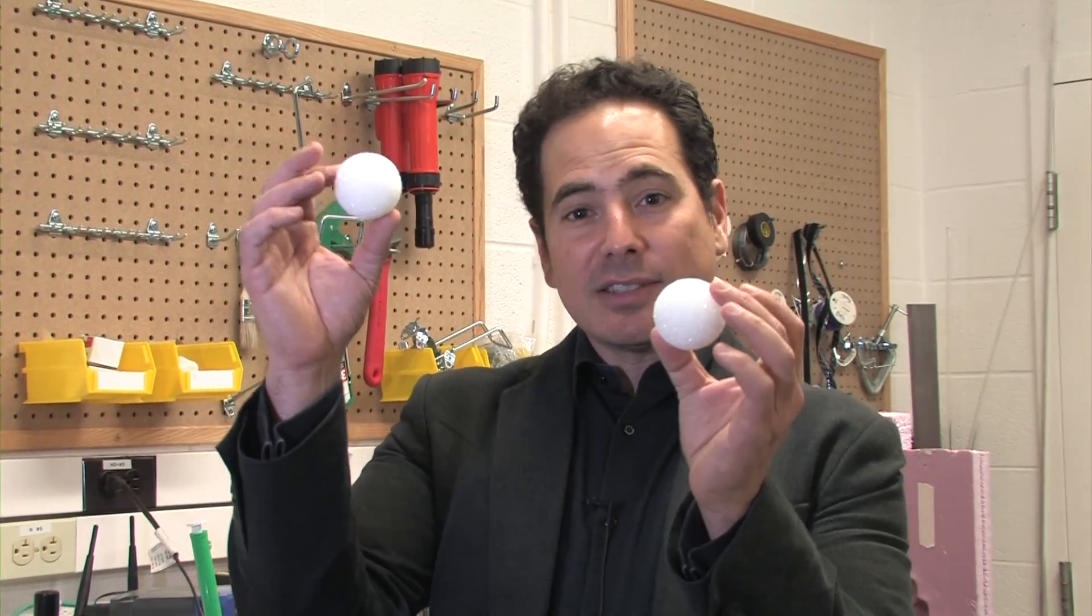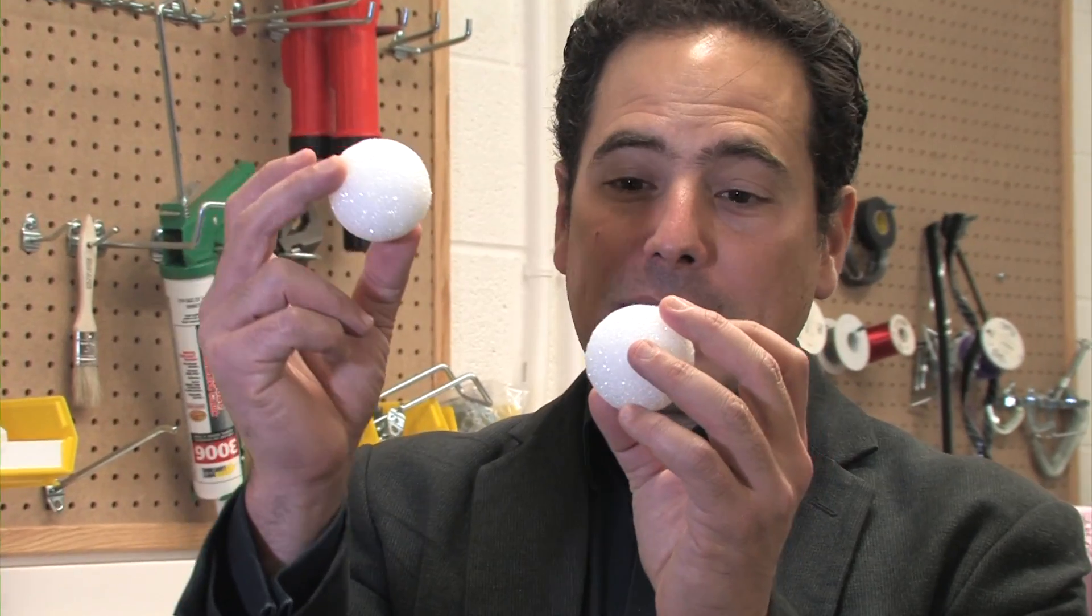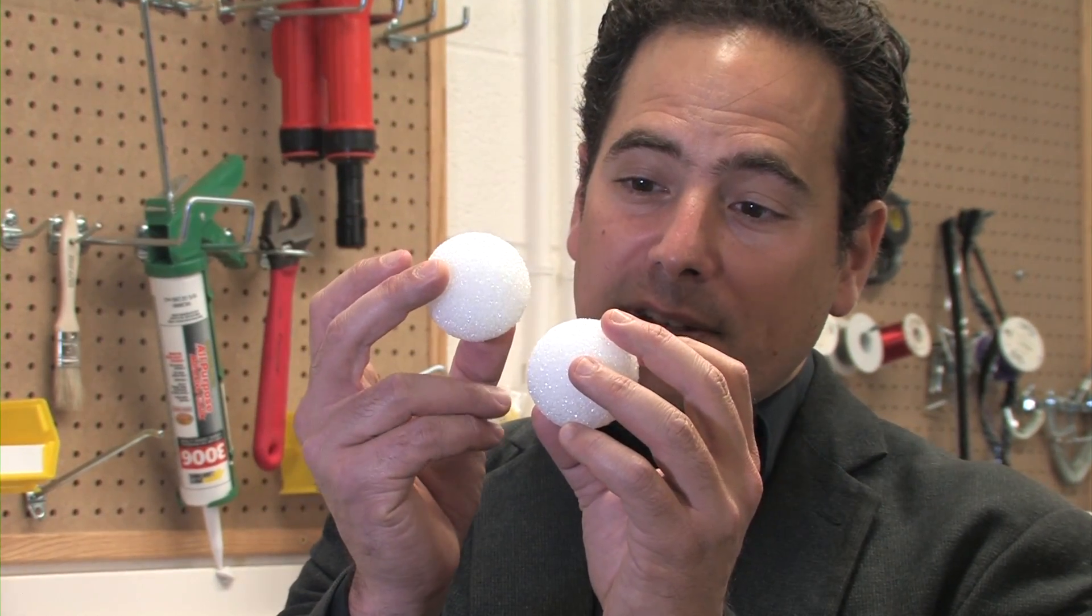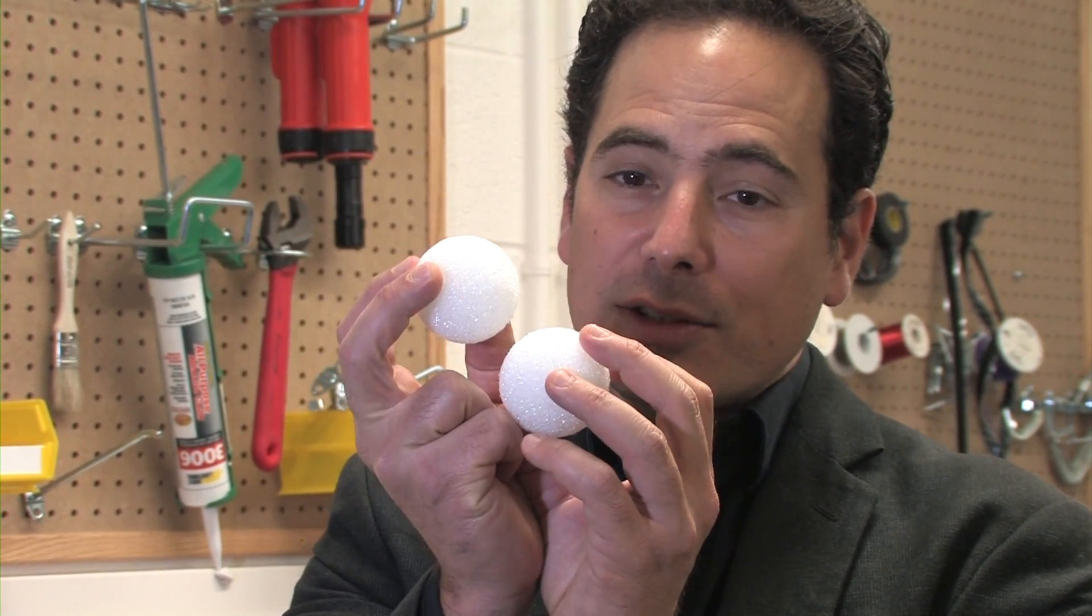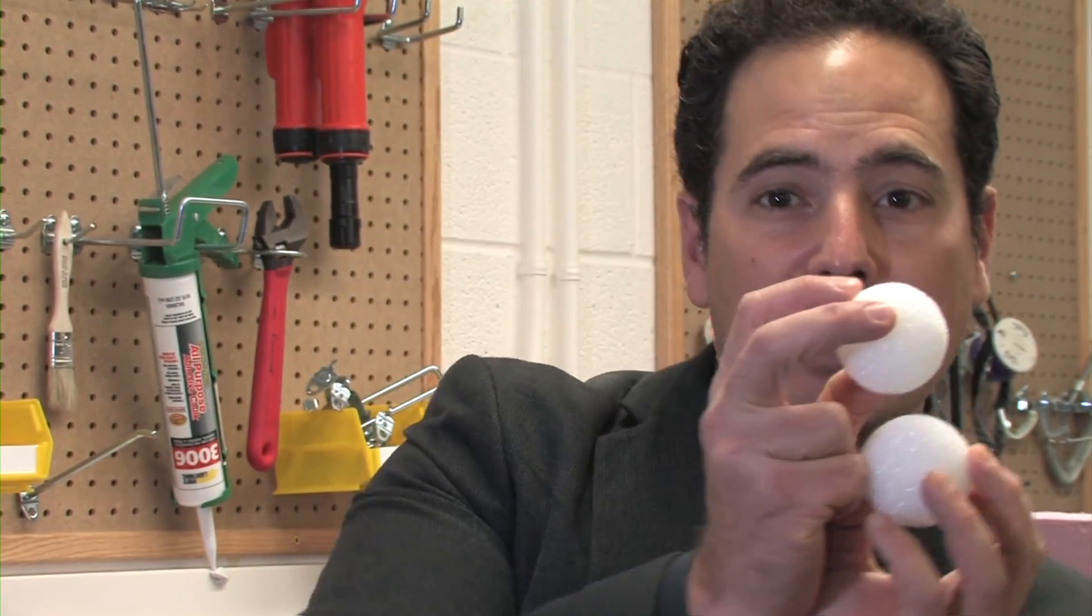And there have been two competing camps. One camp claims that these particles, which are just floating around in the liquid, as they're being pushed together, they're basically squeezing a film of liquid from out in between them. And that as it becomes harder and harder to squeeze this film, the particles lock into structures called hydroclusters that sort of move together and make it more difficult for the cornstarch to flow.